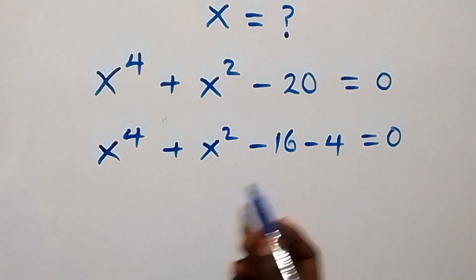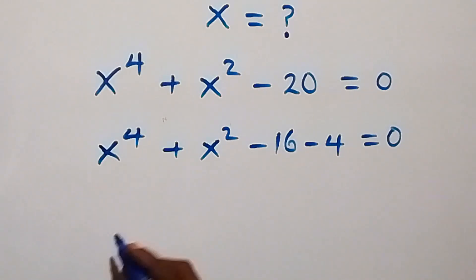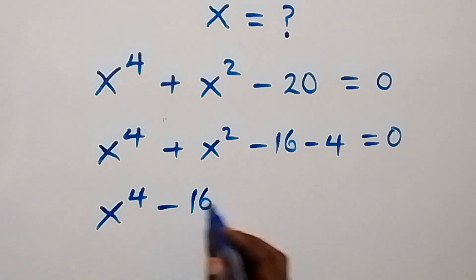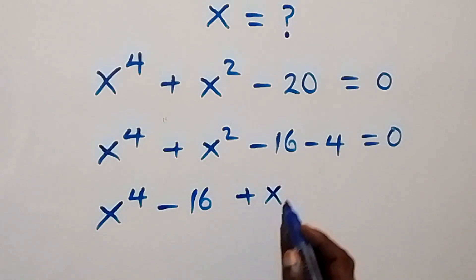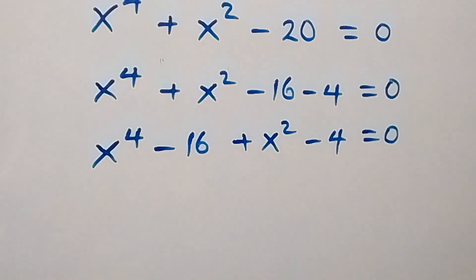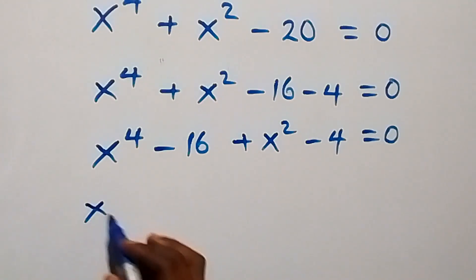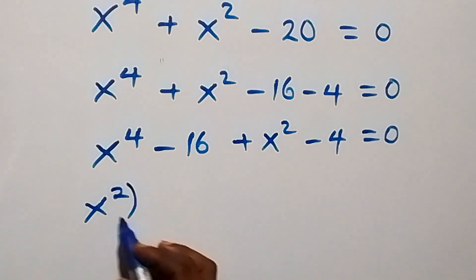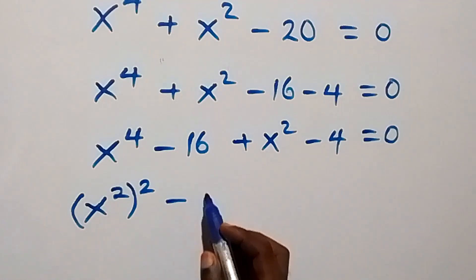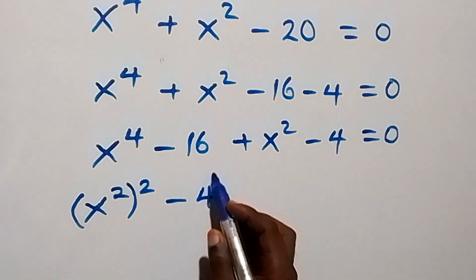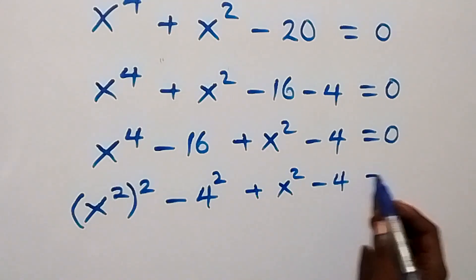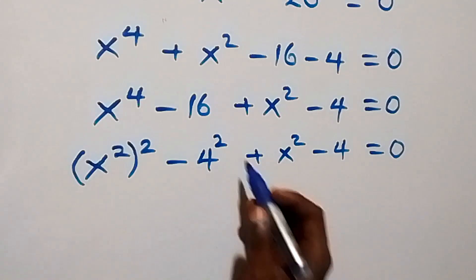Now let's group minus 16 and x raised to power 4 together, giving us x raised to power 4 minus 16, then we have plus x squared minus 4, equals zero. We can write x raised to power 4 as x squared all squared, and we can write 16 as 4 squared, giving us x squared squared minus 4 squared, plus x squared minus 4, equals zero.